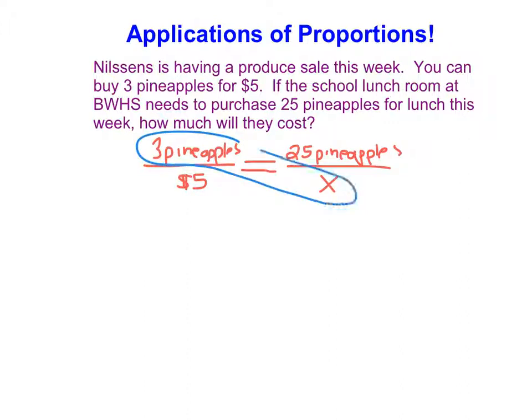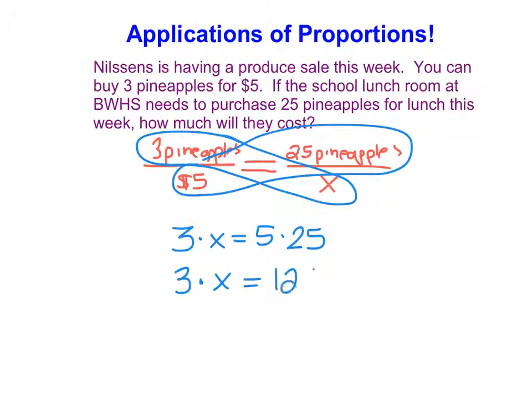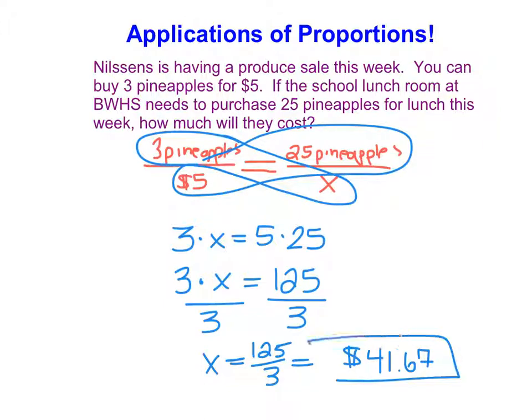And then from here we can utilize the cross product to help us solve. So we will have 3 times X equals 5 times 25, which then 3 times X equals 125. Divide both sides by 3, and we ultimately get an X value that is equal to 125 over 3, which if you use your calculator and divide out, is $41.67 in order for the high school to purchase those 25 pineapples.